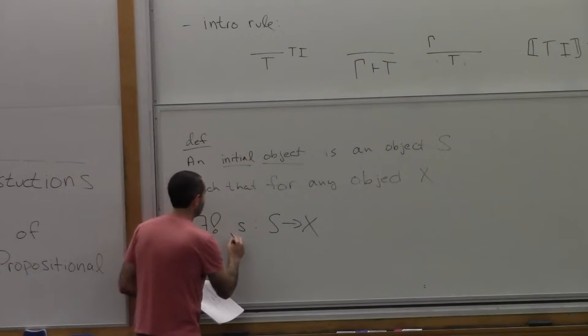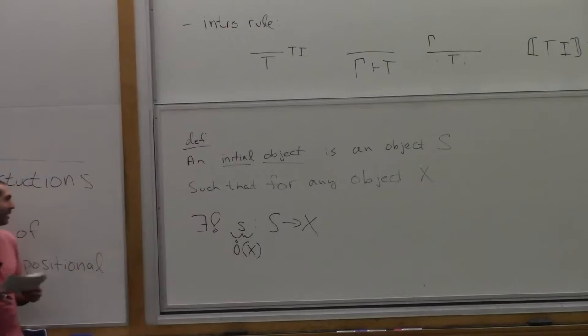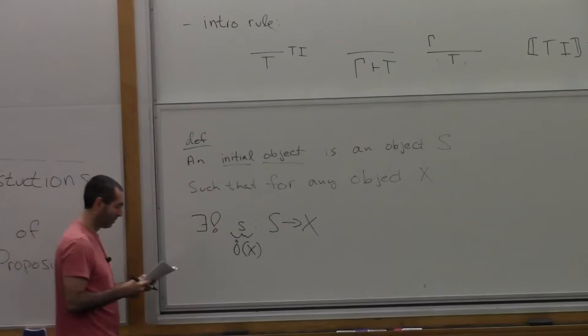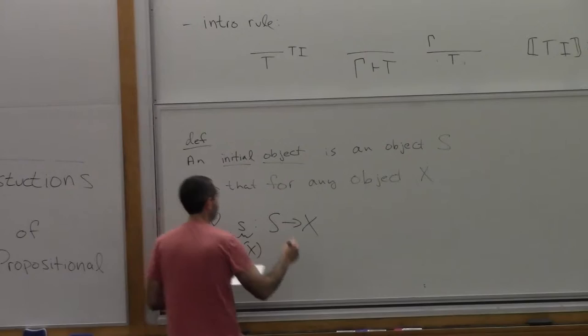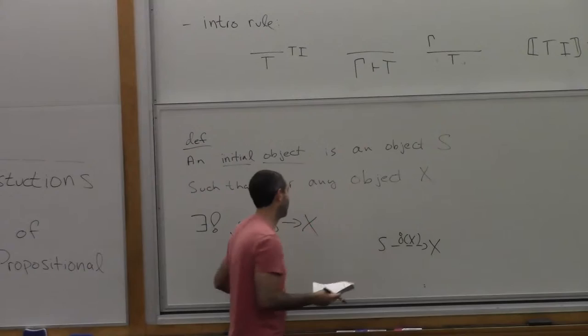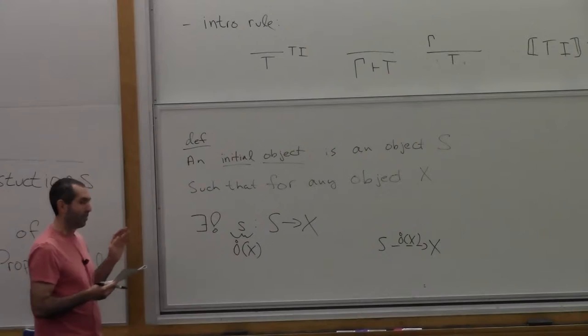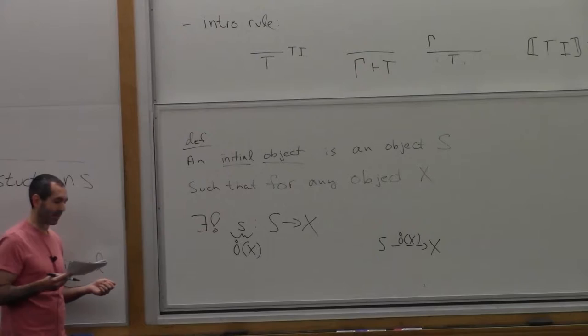This is a terminal object in the opposite category, or equivalently an initial object in this category — we just reversed the orientation of the arrow. By analogy we refer to this map as the co-bang map, written with an upside-down exclamation point, which also has the advantage of looking like an 'i' for initial object. Here's S, here's X, and here is the map that I'm asserting exists.